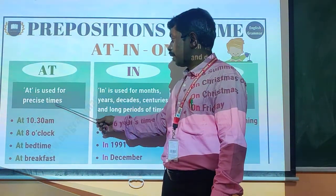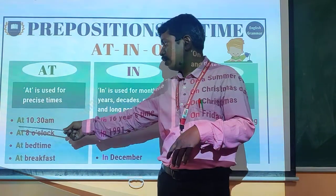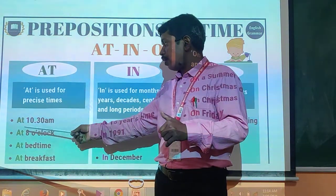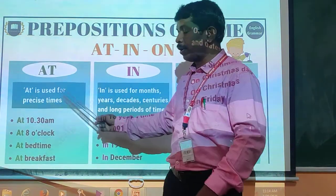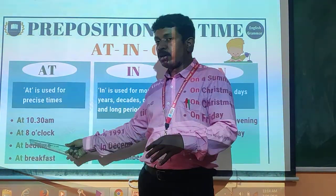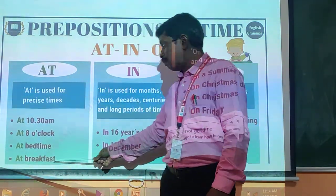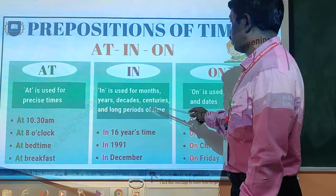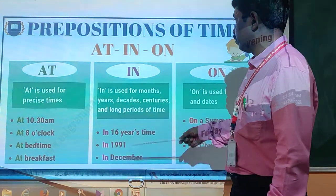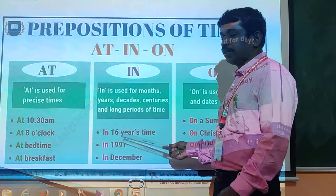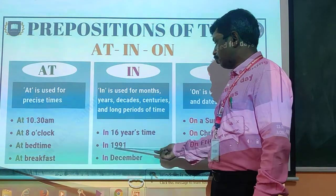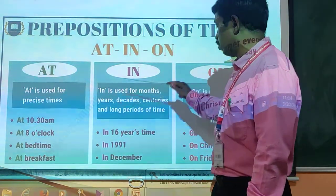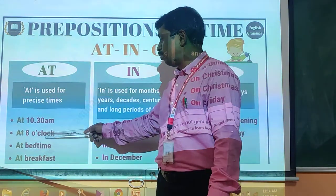'At' is used for precise, particular time — for example, at 10:30 AM. There is no extra time before or after — at 8 o'clock is a particular time. At bedtime, at breakfast time — these are very precise. 'In' is used for months, years, decades, centuries, and long periods of time — for example, in 16 years' time. We don't know which specific 16 years, but we say in 1991, in December.